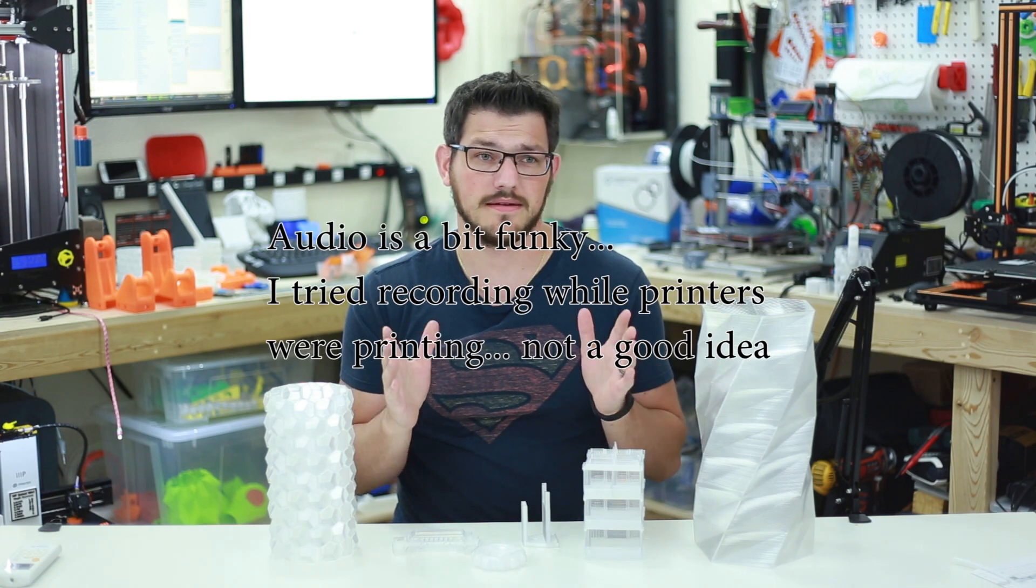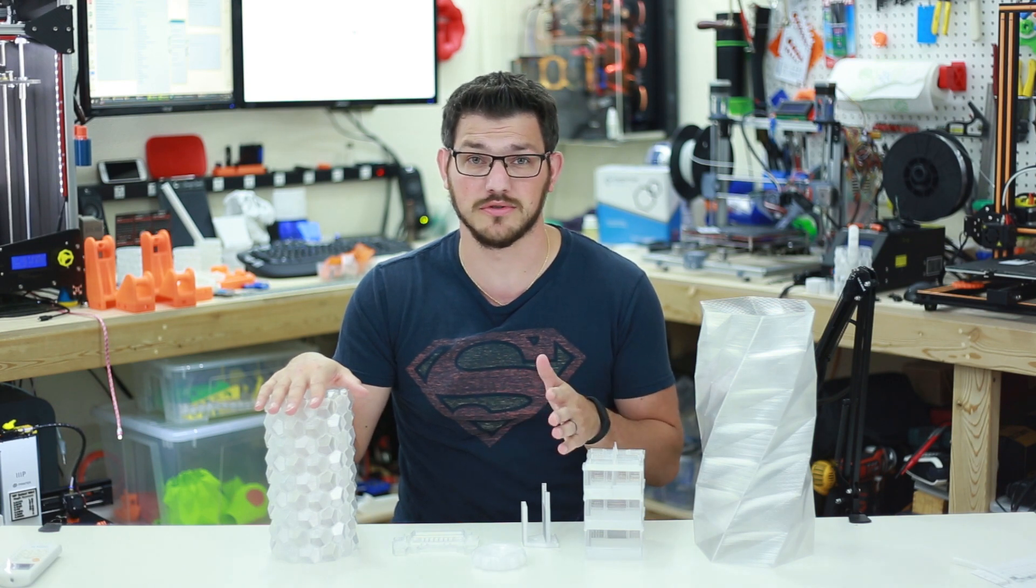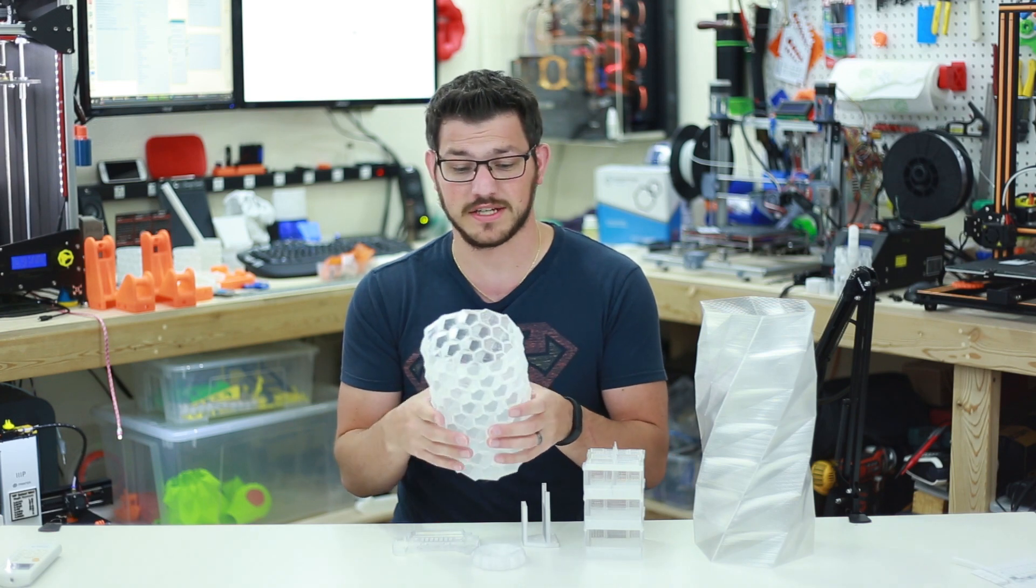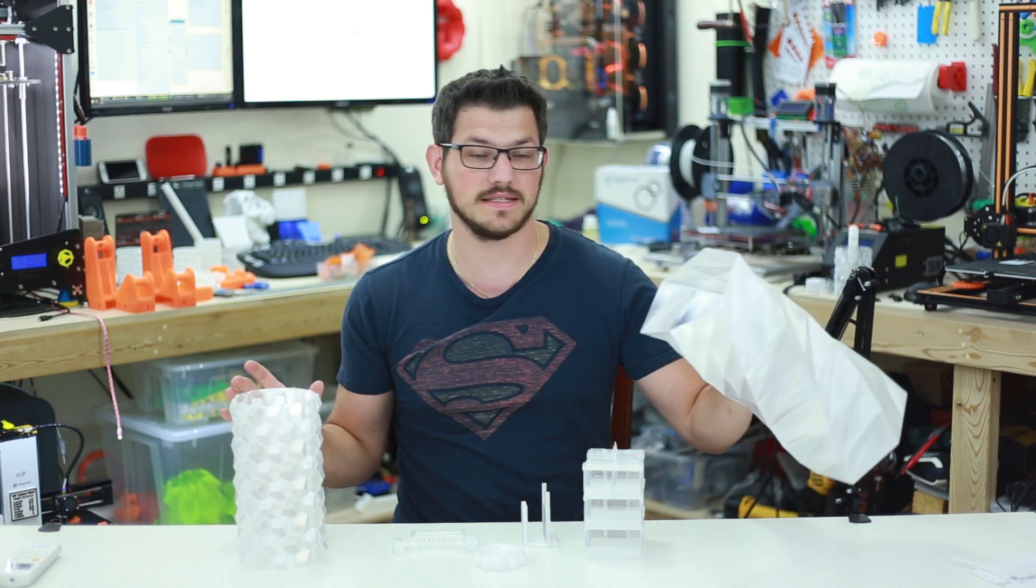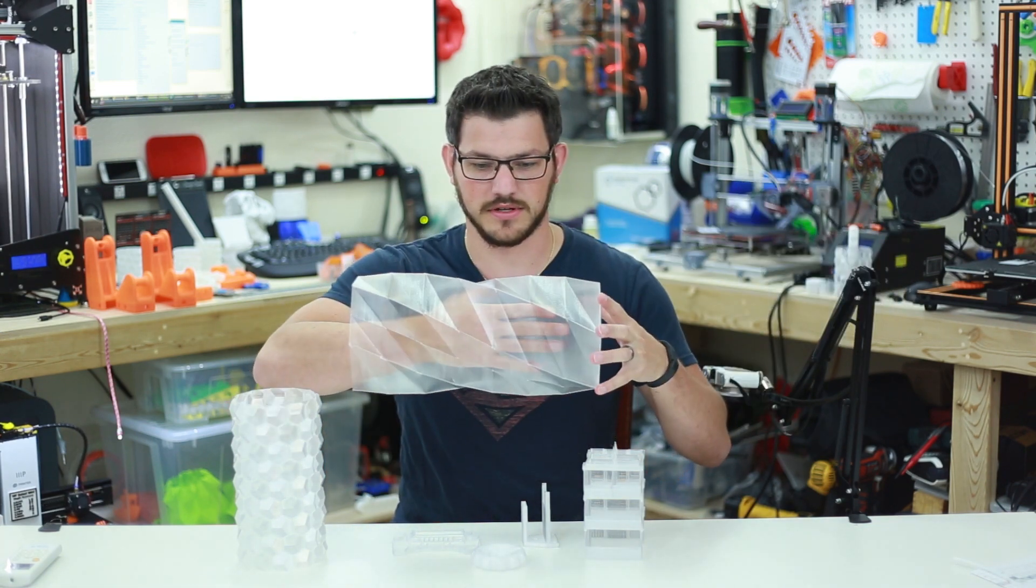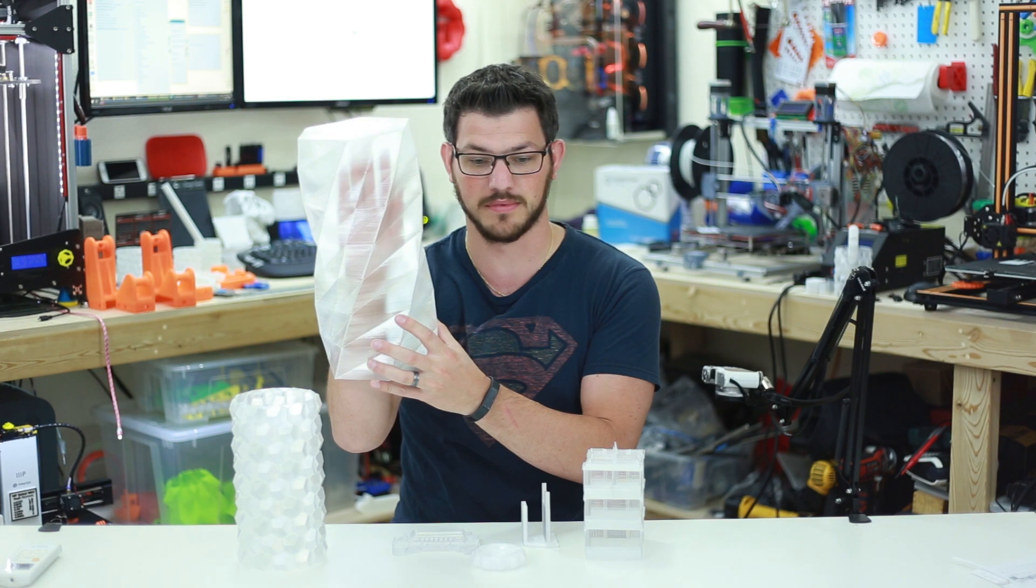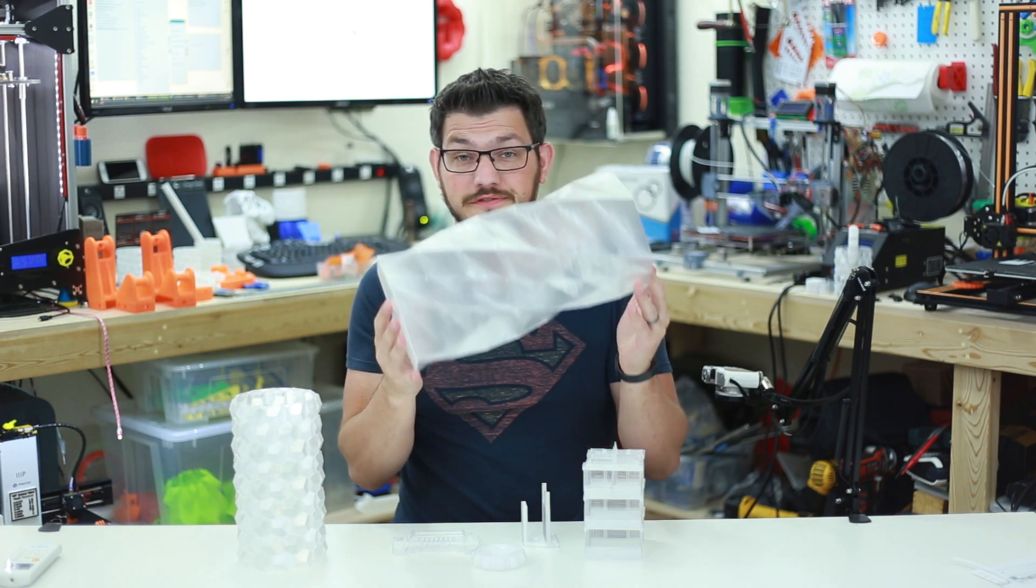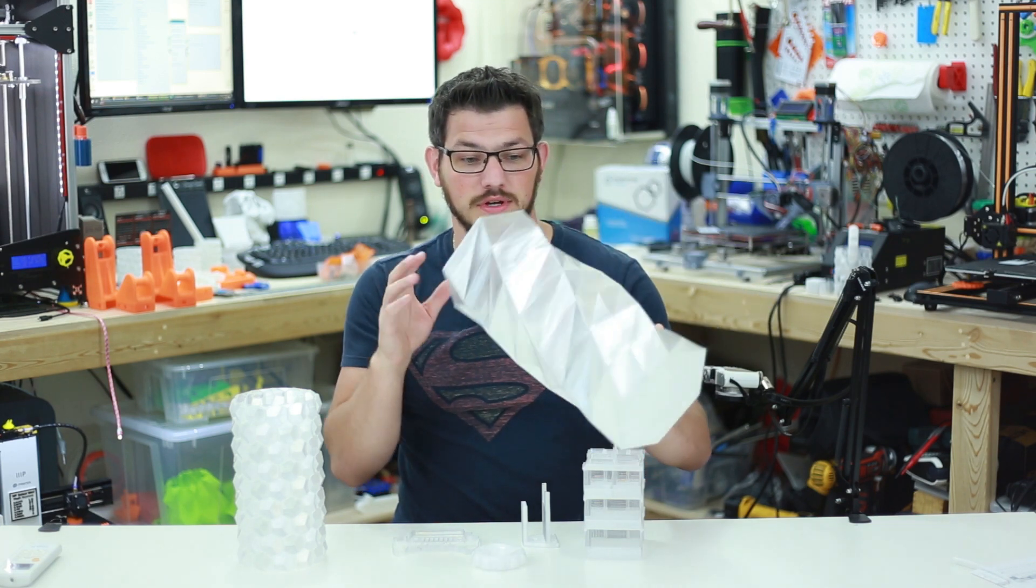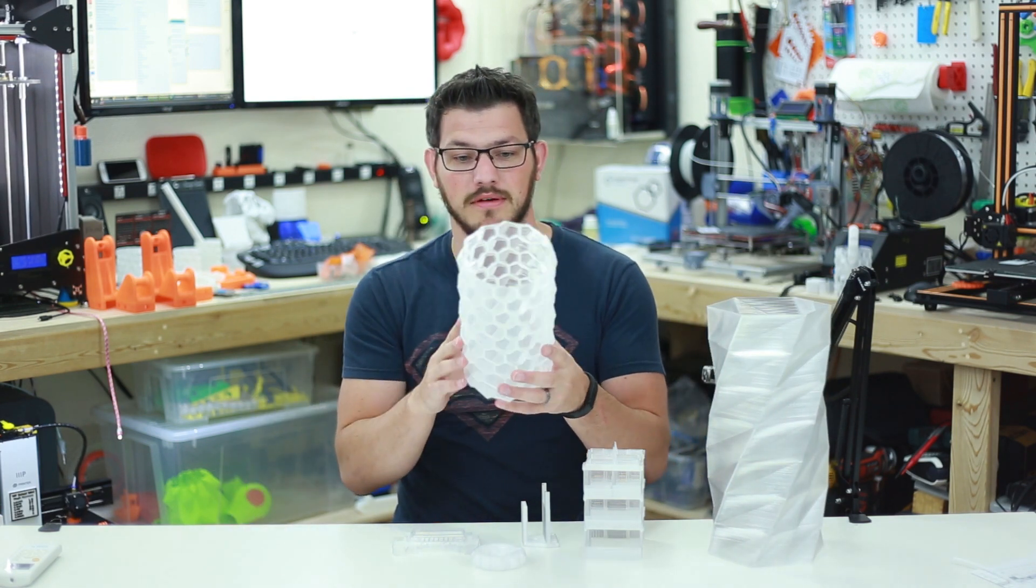All right so we got a couple time lapses there and I have to say this prints like every other Pet-G I've ever printed with. I've had no problems with it. Throw some glue stick down on some glass, Pet-G works out great. It is very very flexible when it comes to single perimeter vases depending on the model you're using and it's very transparent as you can see my hand, you can see really really well.